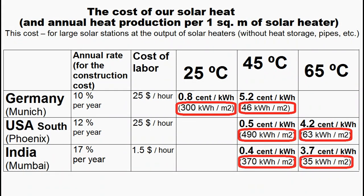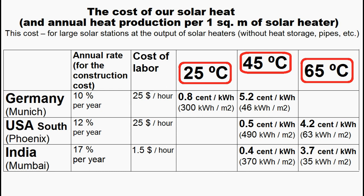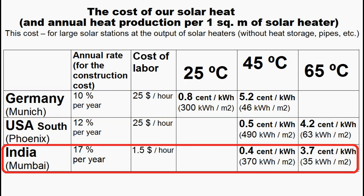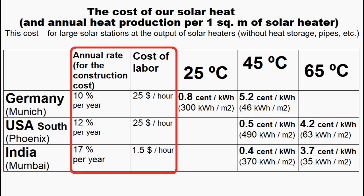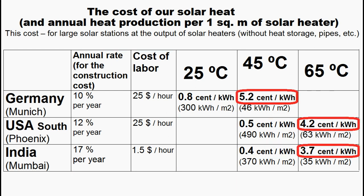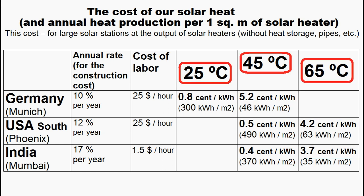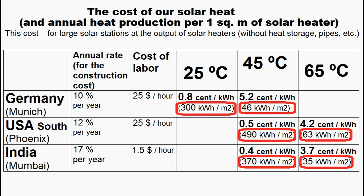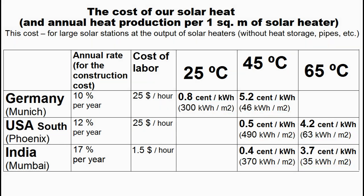This table describes the annual heat production from one square meter of our solar heater and the cost of our heat for different temperatures in the United States, Europe, and India. I calculated the cost of heat based on the cost of capital and labor. These are the cases when the cost of our solar heat approximately equals the cost of heat from natural gas, corresponding to water temperatures of 45 or 65 degrees Celsius. However, a decrease in water temperature significantly increases annual heat production and therefore decreases its cost — in some cases our solar heat is about 8 times cheaper than heat from natural gas.